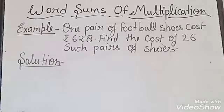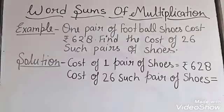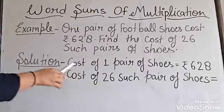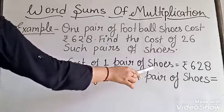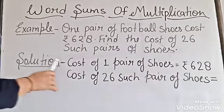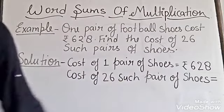Let's solve it. Let us see what we need to find. As we know, the cost of one pair of shoes is equal to rupees 628, and we have to find the cost of 26 such pairs of shoes.